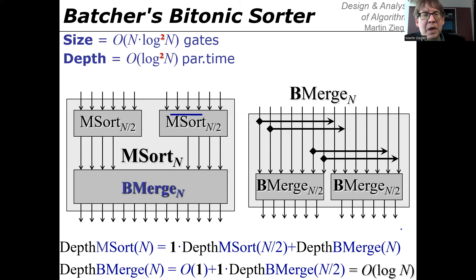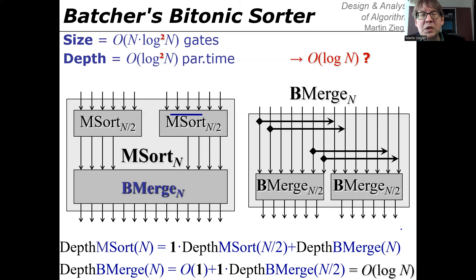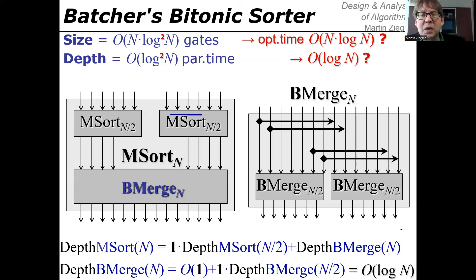We want to sort 1 billion elements. The logarithm squared is roughly 900 cycles for sorting 1 billion elements — that's fast. The size is also close to optimal: according to Brent's principle, the optimal size is at least n log n, and Batcher's bitonic sorter achieves O(n log² n) — only a logarithmic factor away, which is a factor of about 30 for input size 1 billion. Batcher's bitonic sorter is almost optimal.